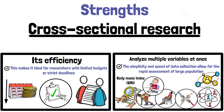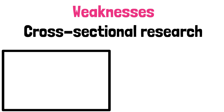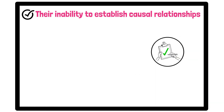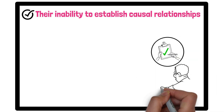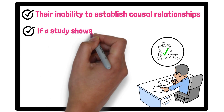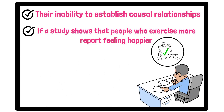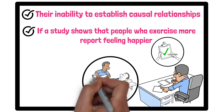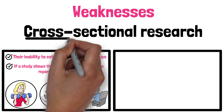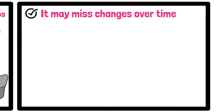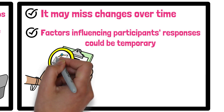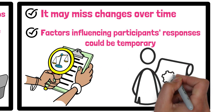Despite their advantages, cross-sectional studies have notable limitations. A primary drawback is their inability to establish causal relationships. Since data is only collected at one moment, researchers cannot determine which variable came first or whether one directly caused another. For example, if a study shows that people who exercise more report feeling happier, it is impossible to tell whether exercise leads to happiness or if happier people are more inclined to exercise. Furthermore, the snapshot nature of cross-sectional research means it may miss changes over time, as factors influencing participants' responses could be temporary, making the findings less reliable if circumstances change shortly after data collection.